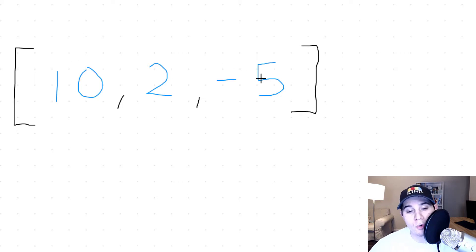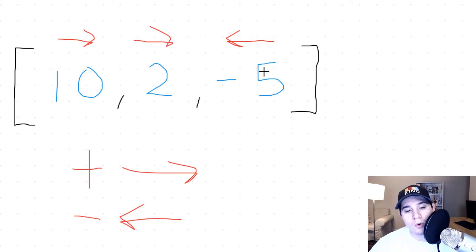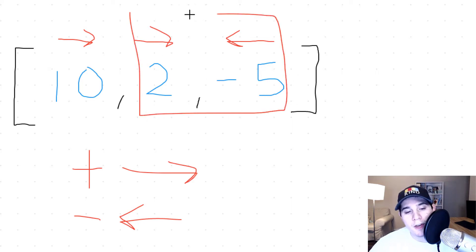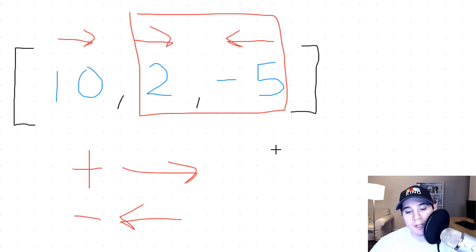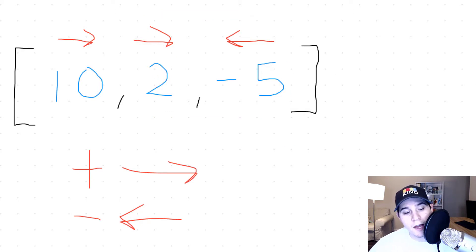For the first example, we have [10, 2, -5]. We need to find what numbers are left over after the collisions. Positive numbers move right and negative numbers move left. So 10 moves right, 2 moves right, and negative 5 moves left. We only care about two numbers that are colliding — so 2 and negative 5 are going to collide. Since the absolute value of negative 5 is 5, which is greater than 2, the 2 will get removed. Negative 5 comes out on top, so after they collide we're left with 10 and negative 5.